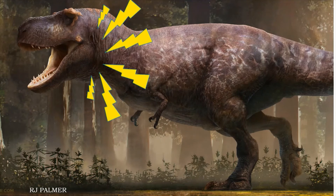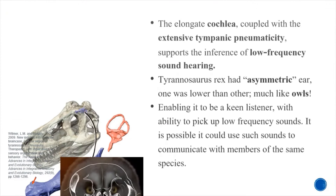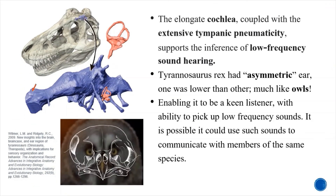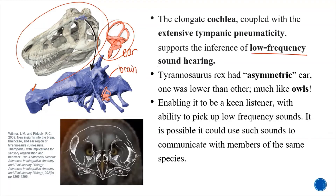So what about Tyrannosaurus rex himself? What does science say about his vocalization? CT scans of the skulls show a fully preserved brain cavity along with ears. We can look at his morphology to know what kind of sounds he was capable of picking up, and therefore what kinds of sounds he could produce. The delicate cochlea, coupled with extensive tympanic membrane capacity, supports inference of low-frequency sounds, says Witmer in his 2009 study. T. rex also had an asymmetric ear, in which one ear was lower than the other, much like owls. This enables T. rex to be a very keen listener, specifically able to pick up low-frequency sound. It is possible he could use such sounds to communicate with members of the same species.